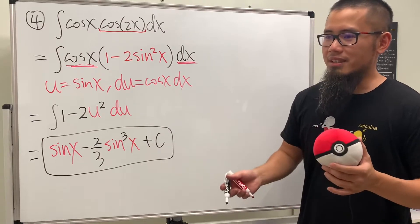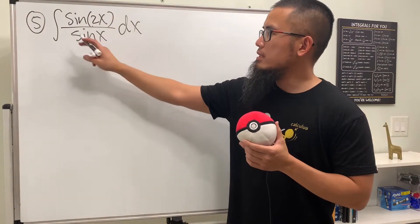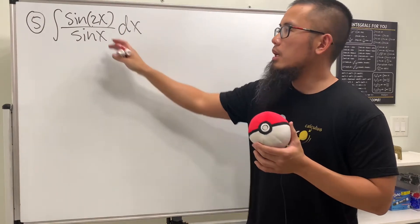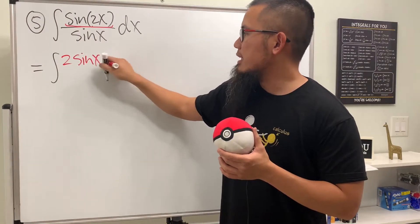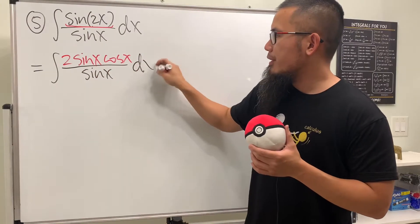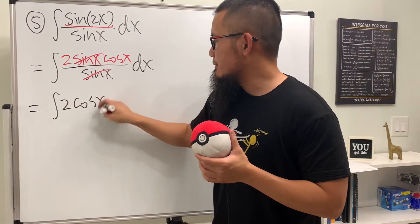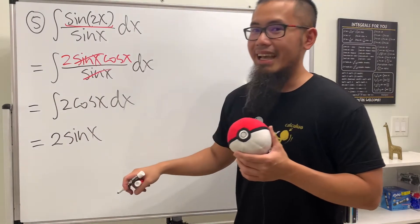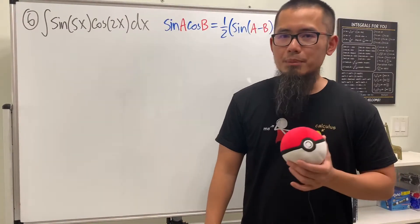For number five we integrate sine of 2x over sine x. We're dealing with a double angle for sine, so we use the identity: sine of 2x equals two sine x times cosine x. We still have the denominator sine x, and this is really nice because sine x in the numerator and denominator cancel. We're left with the integral of 2 cosine x, and integrating cosine is positive sine, so this is just 2 sine x plus c. That's it.